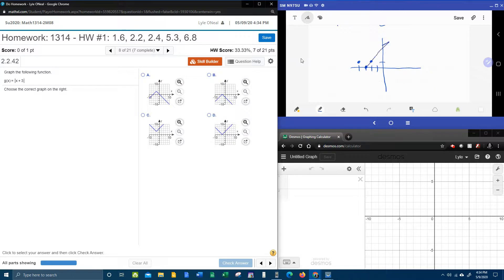And then I can see that I'm going to have a V right there. So that would be a left shift three units. That takes our V and shifts it left three units. And that looks like answer choice D.